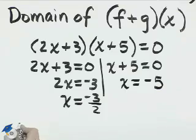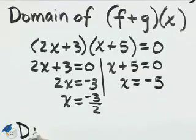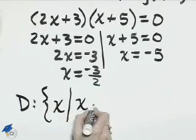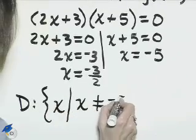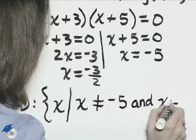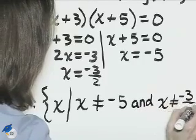And so the domain of this function will be the set of all real numbers x, such that x is not equal to negative 5, and x is not equal to negative 3 halves.